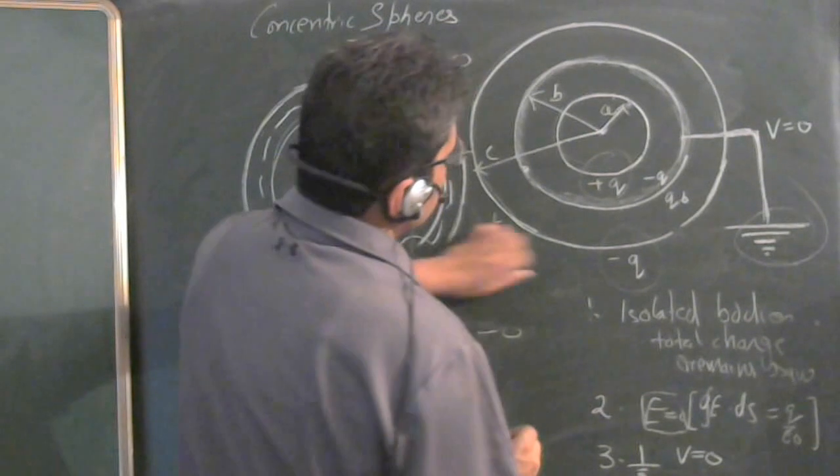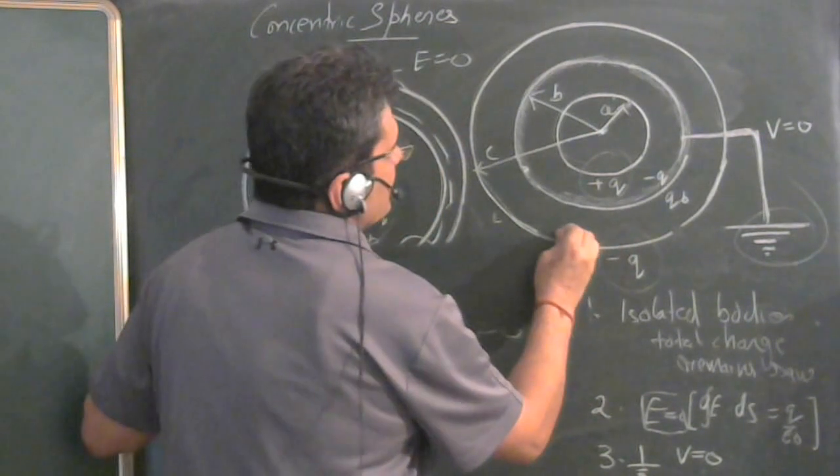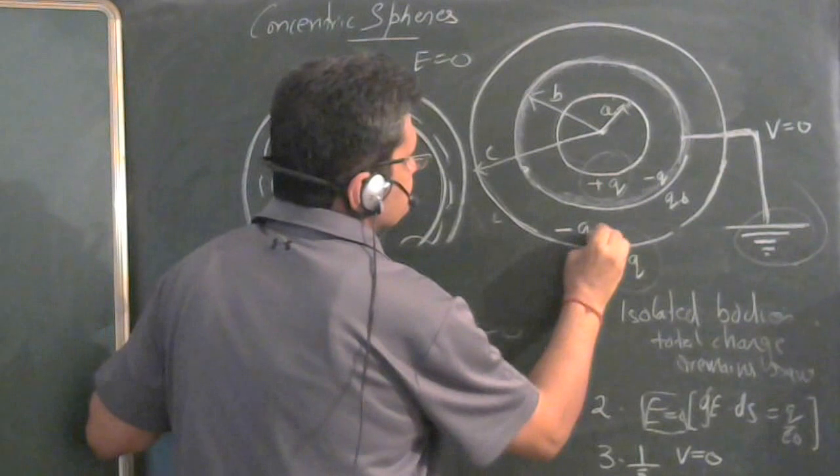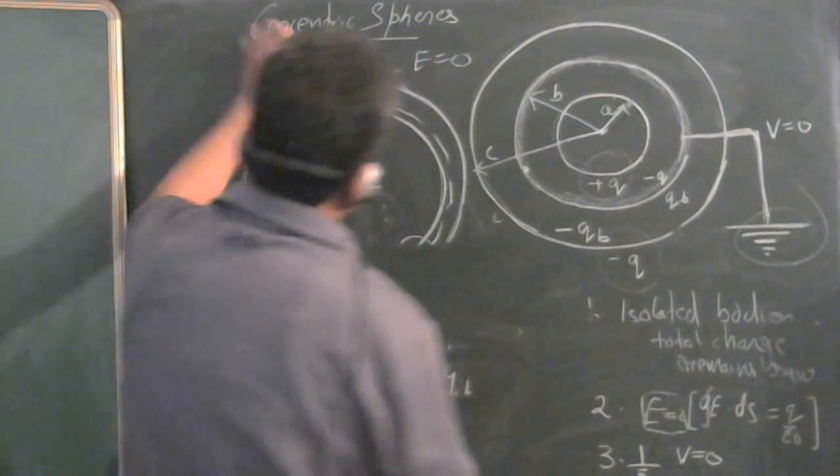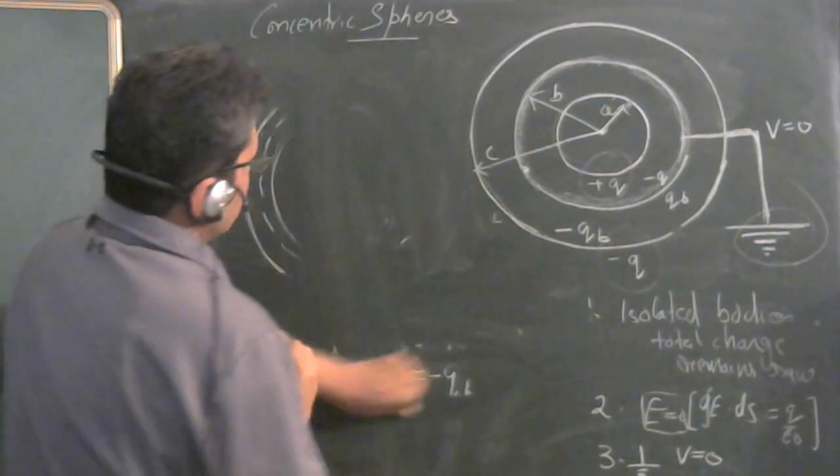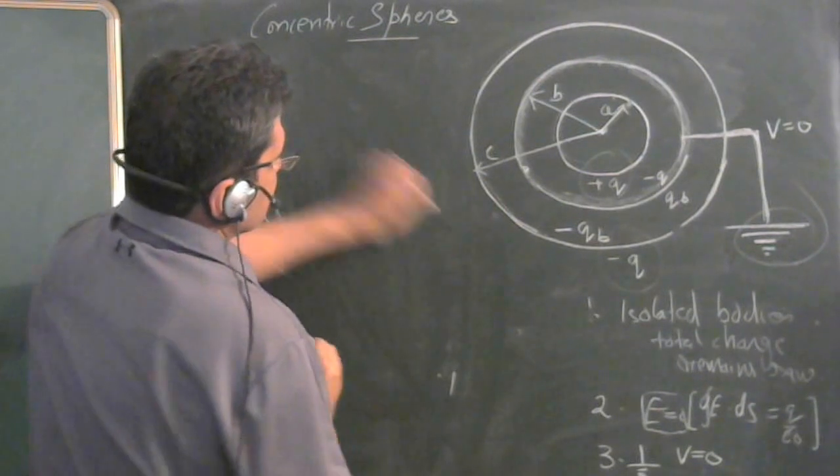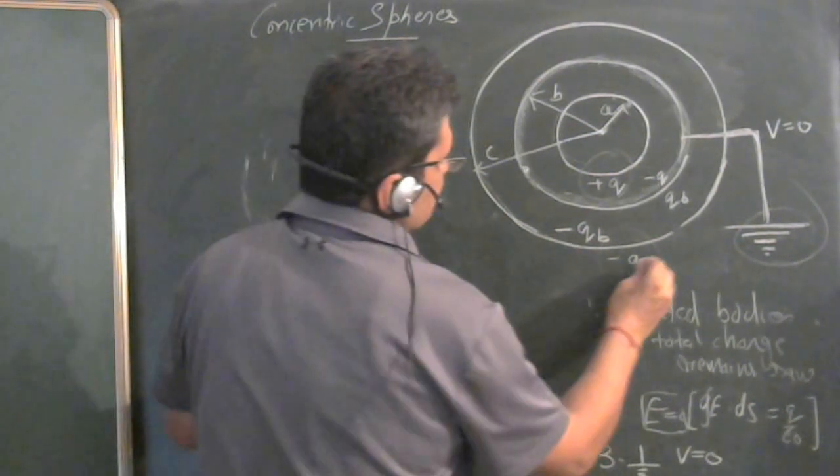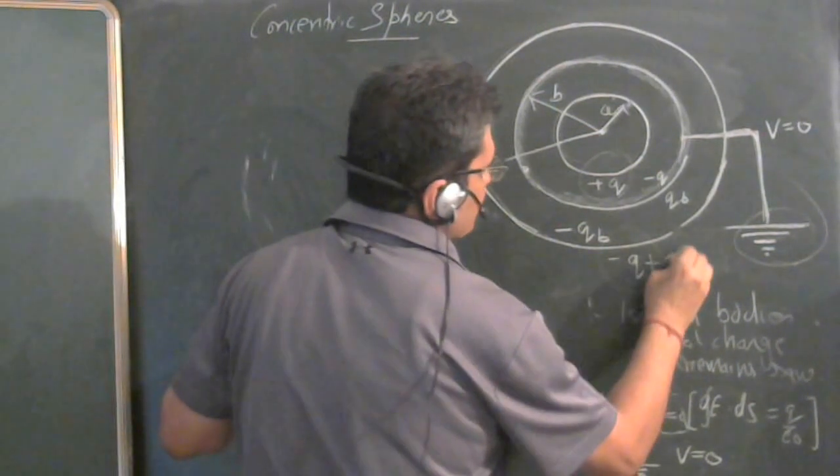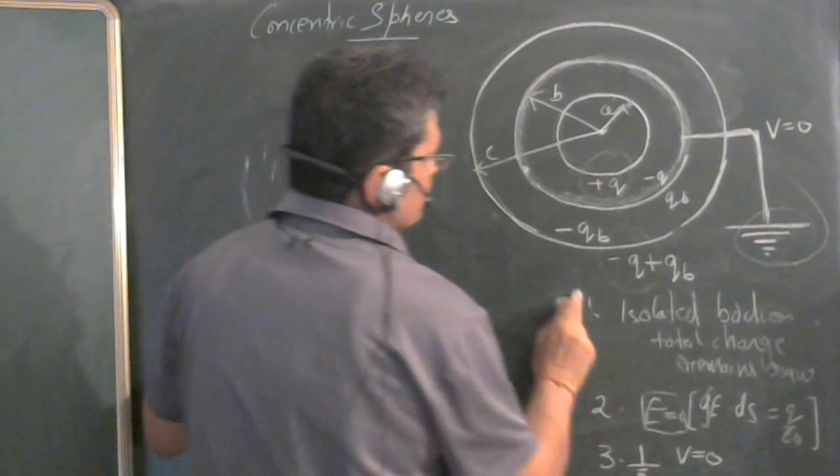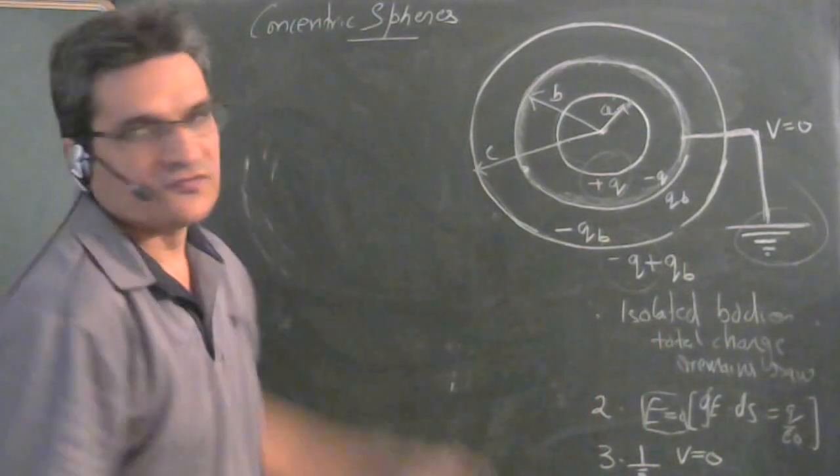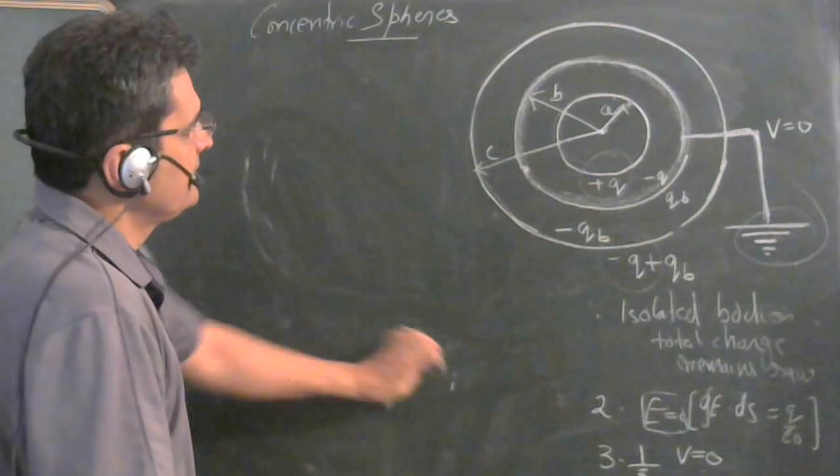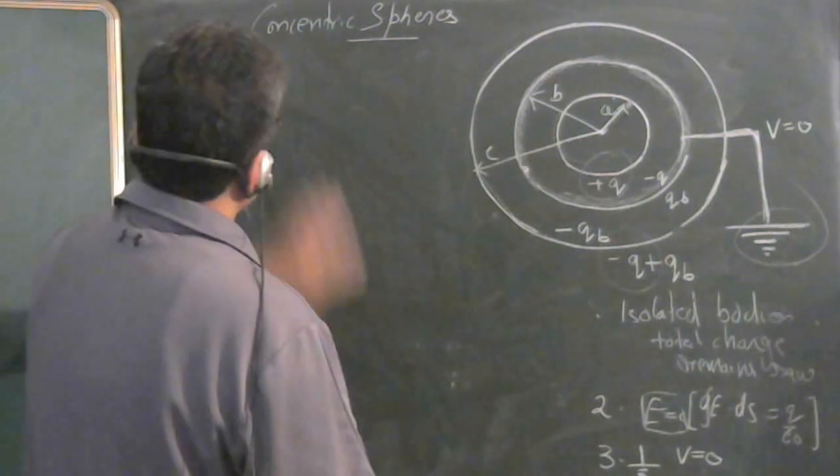So here, the charge will be minus QB. Now what will be the charge on the outer side? Because the total charge is conserved. Minus QB has come here. So plus QB has to be here, so that the total charge on this sphere doesn't change. Now, the basic groundwork is done.